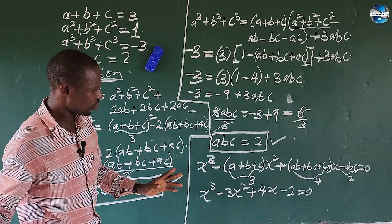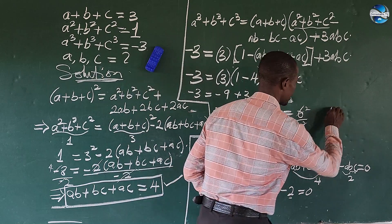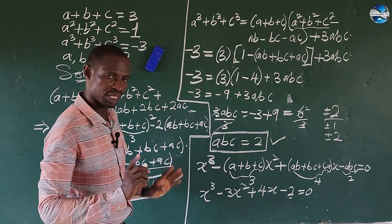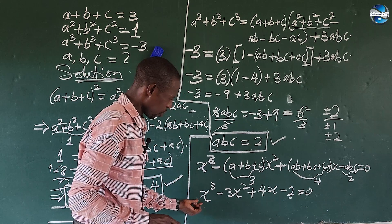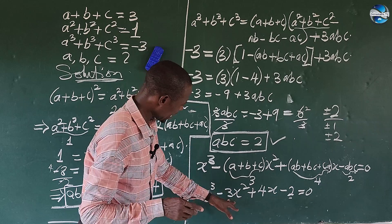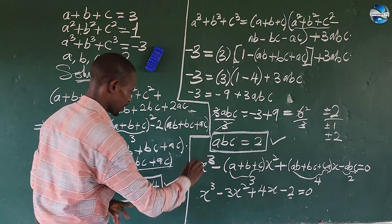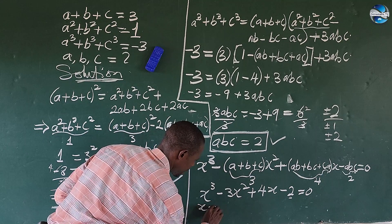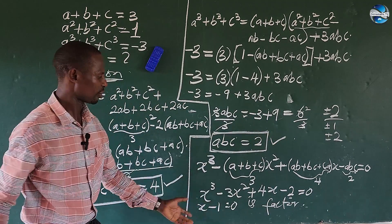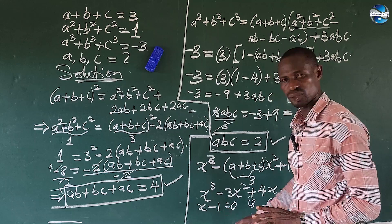We need to find the first root that satisfies this expression. From the constant term, we try factors of plus or minus 2: plus or minus 1, plus or minus 2. If we substitute plus 1: 1 minus 3 plus 4 minus 2 equals zero. So x equals 1 is a root, meaning x minus 1 is a factor. So we get our first value of x to be positive 1.